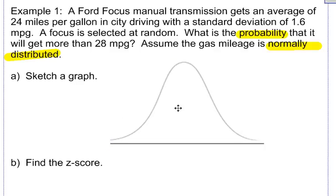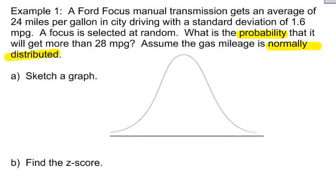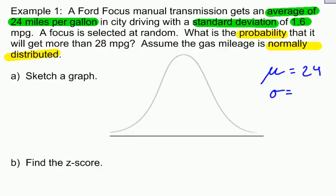So I'm going to label some things on this picture. As I go through this example again, a Ford Focus manual transmission gets an average, so there's my mean. There are two things that I need in order to set up this normal model: I need μ the mean and σ the standard deviation. So the average or the mean is 24 miles per gallon. As I continue reading, I see that it says a standard deviation of 1.6, so there's my standard deviation σ equals 1.6. And I want to know what is the probability that it will get more than 28 miles per gallon, so I'm gonna highlight more than 28 miles per gallon as well.